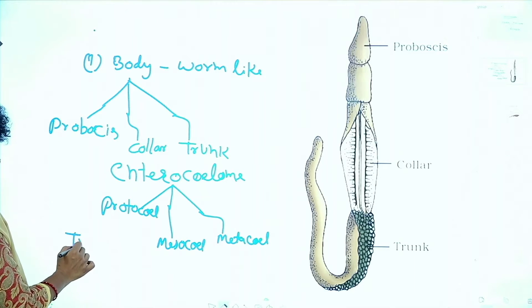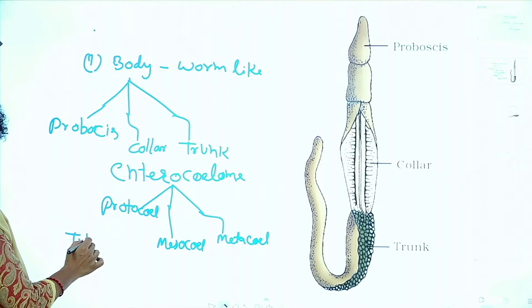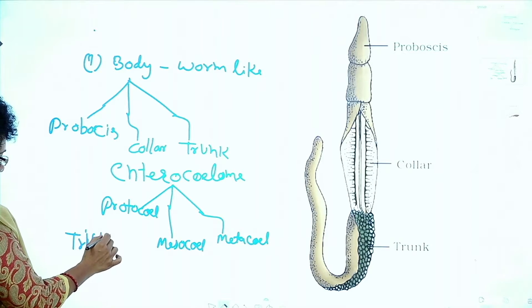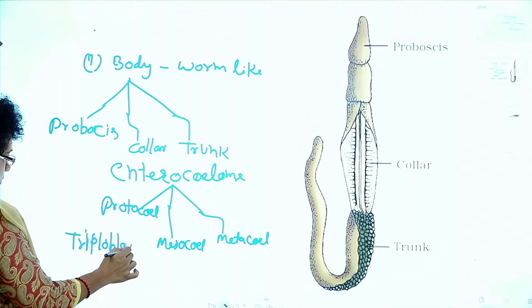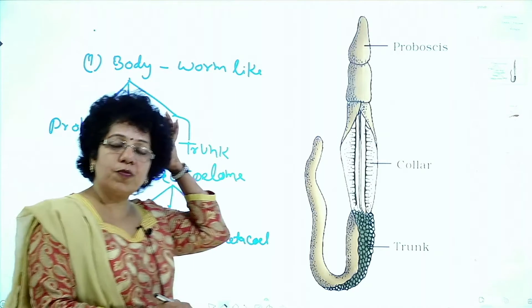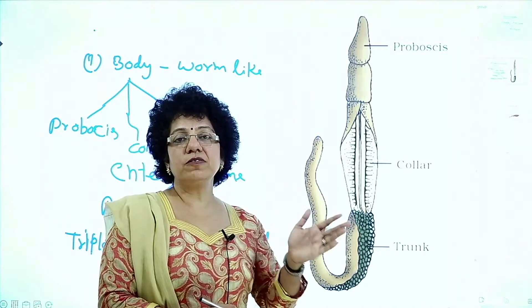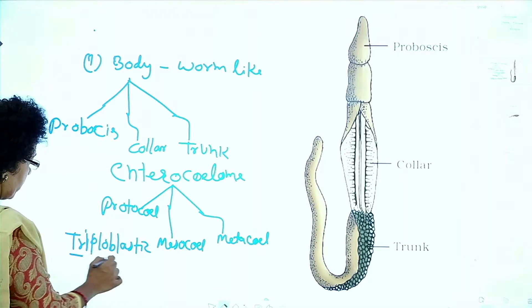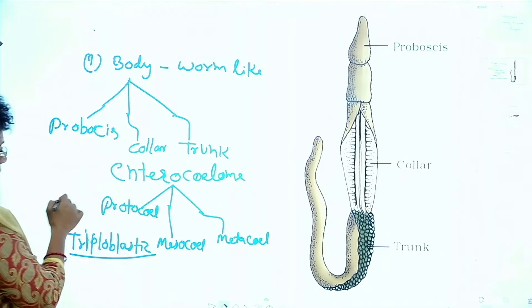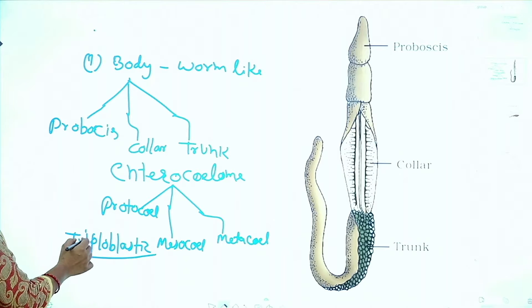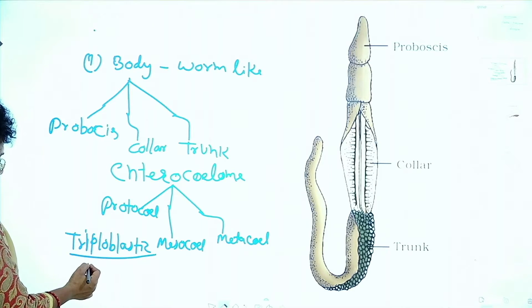The body is triploblastic — made up of ectoderm, mesoderm, and endoderm. Next main feature is organ system level of body organization.